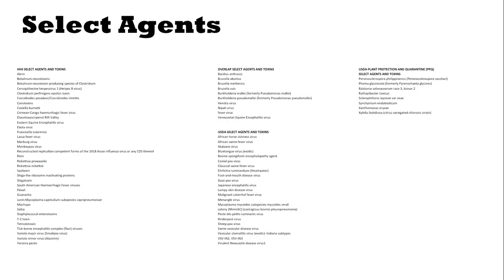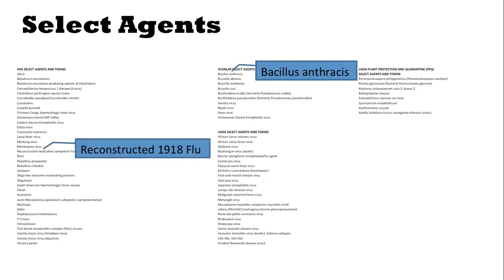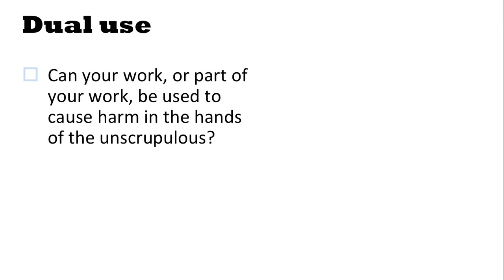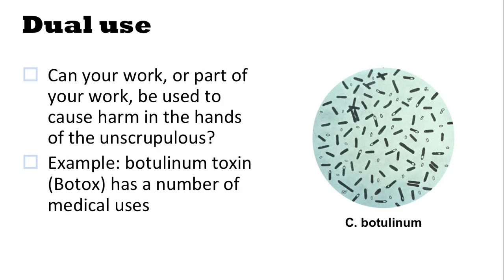Here's a list of potential select agents. Some of these will be familiar to you — for example, anthrax, and also the reconstructed 1918 flu, which was recreated to be studied and to determine why the 1918 flu was so deadly. An interesting example is botulinum neurotoxin, which brings up the concept of dual use. Can your work or part of your work be used to cause harm in the hands of the unscrupulous? Botox has a number of potential medical uses, but research motivated by medical concerns could be misused to cause harm. Dual use means considering not just potential harms in the way you plan on using your research, but how others might use it — including both the physical product of the research and also what you might publish.